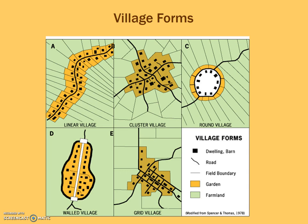Most of these are pretty self-explanatory. Linear means it forms a line along a river or a road. Cluster means it's nucleated or clustered around a certain area. Round, or rundling, forms a circle — you find this a lot in East Africa with the Maasai, where they build houses in a circle around the cattle they herd. A walled village is exactly what it sounds like. A grid village uses grid lines to form a pattern on the land and the buildings relate to that.